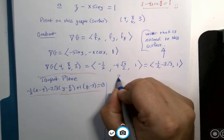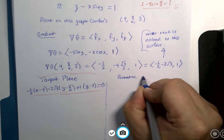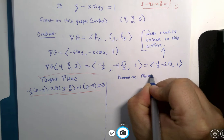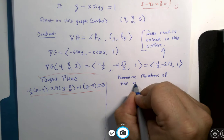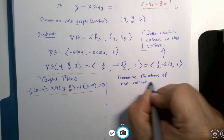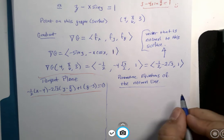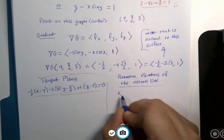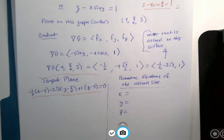I could also write the parametric equations of the normal line, which basically uses the same information, but displays it in an x equals, y equals, z equals set of parametric equations.